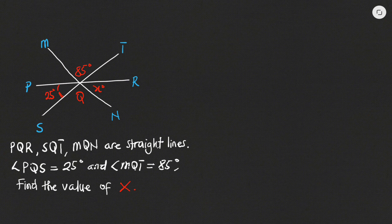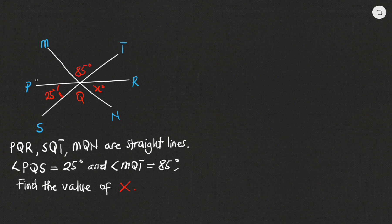This is the first example. We can see the plane angles given to us and we're told that PQR, SQT, and MQN are straight lines. Angle PQS — from P to Q at the center, to S — is given as 25 degrees. Angle MQT — from M to Q, to T — is given as 85 degrees.